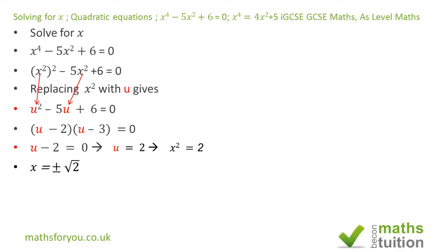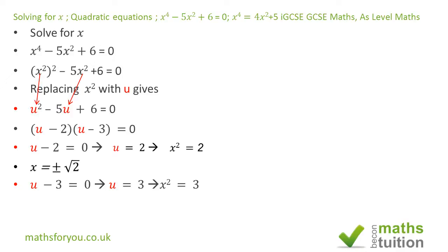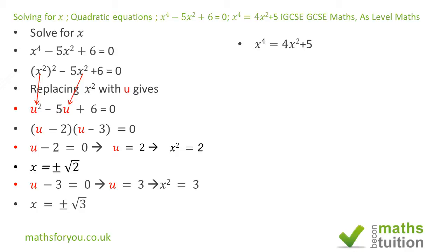For u minus 3 equals 0, u equals 3. Again, don't forget u is the same as x squared, so x squared equals 3. Taking the square root of both sides, x equals plus or minus the square root of 3.